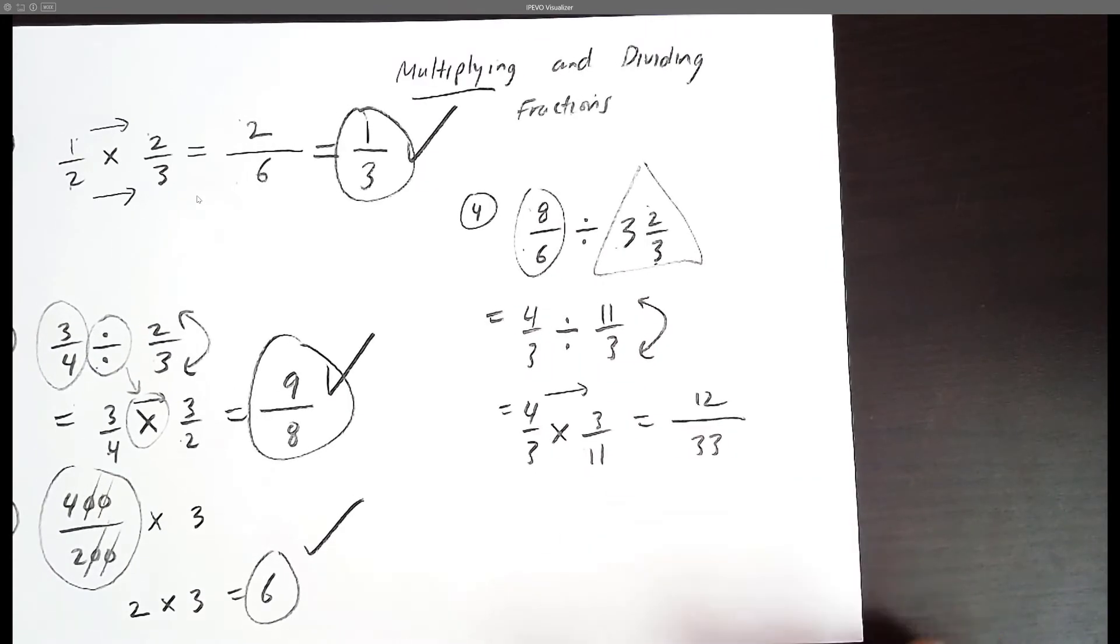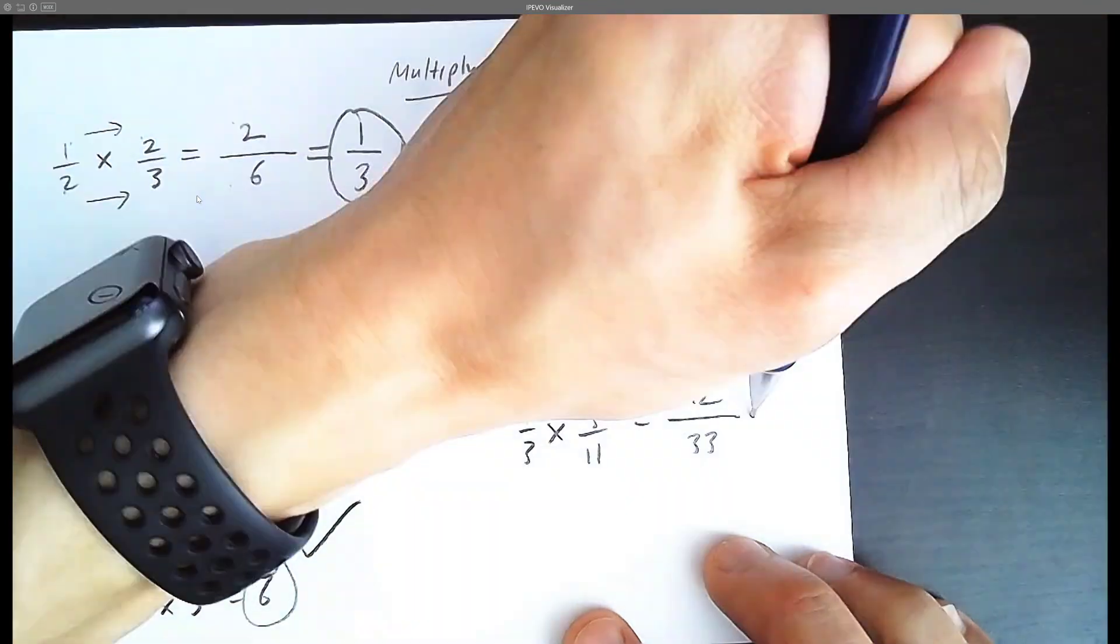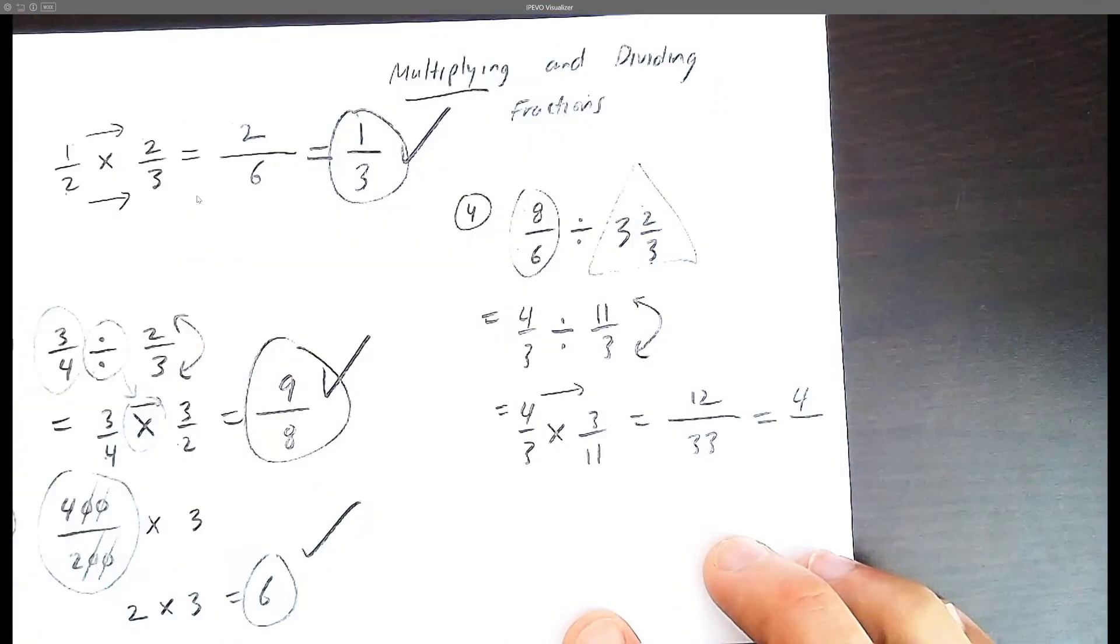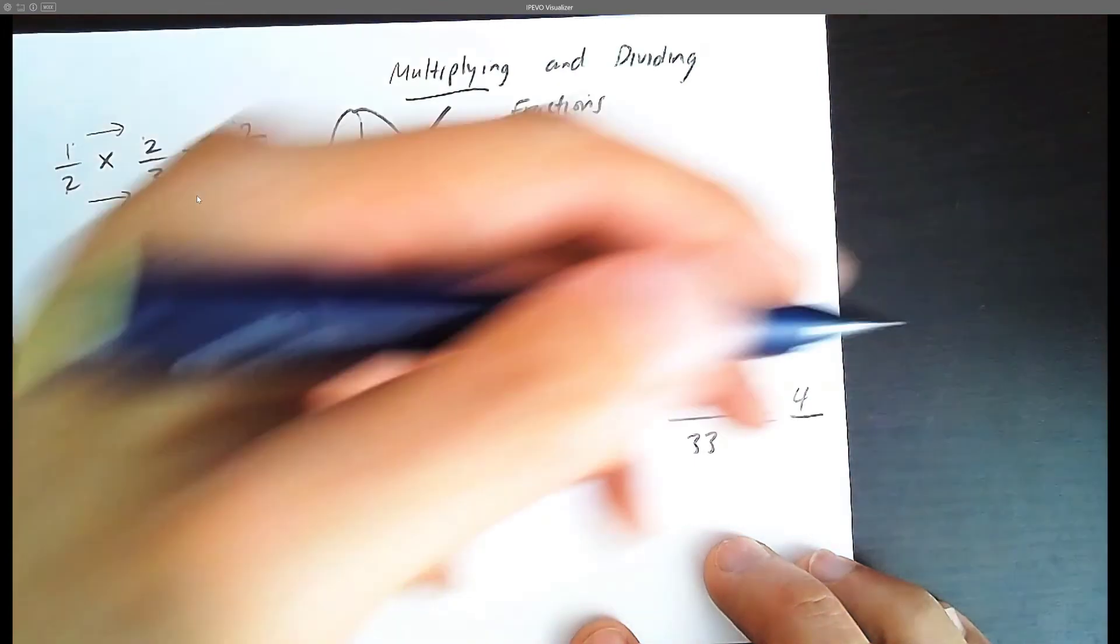You can actually divide top and bottom by some number, by 3. So when you divide the top by 3, we get 4. And when you divide the bottom by 3, you get 11.